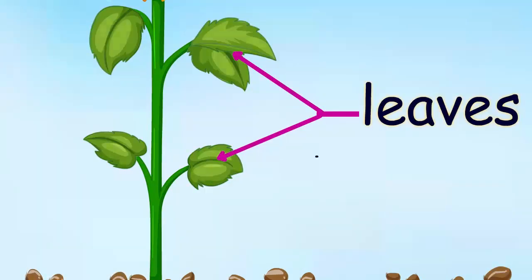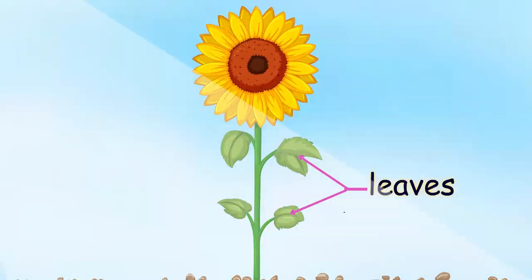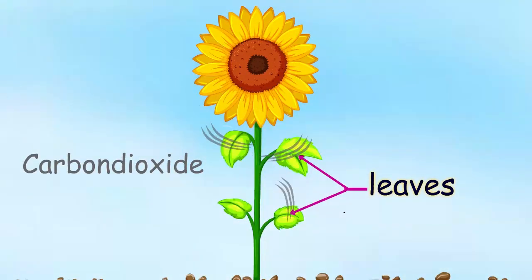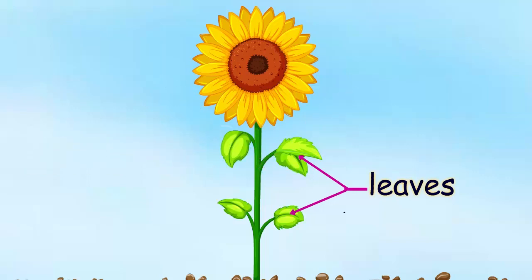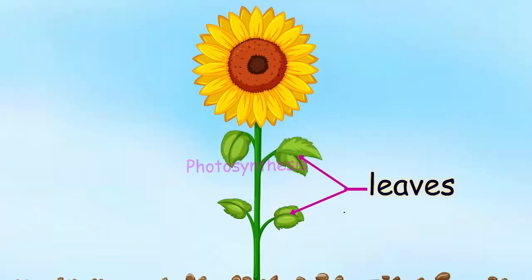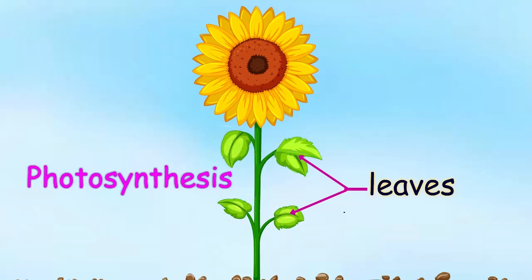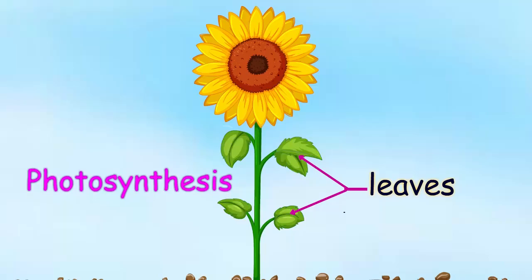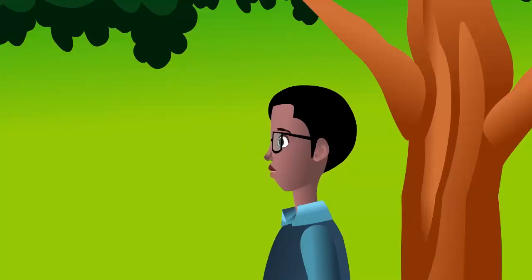Leaves are parts of the plant that grow out of the sides of a stem. The leaves absorb sunlight, carbon dioxide, and air to prepare food for the plant. The process of preparing food by plants is called photosynthesis. During this process, oxygen is formed and released into the air. Humans breathe oxygen.